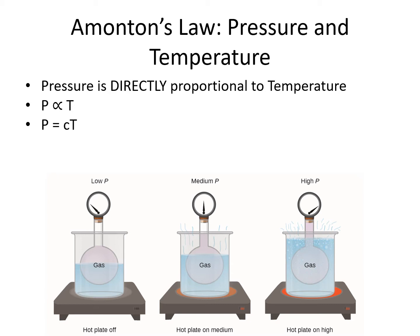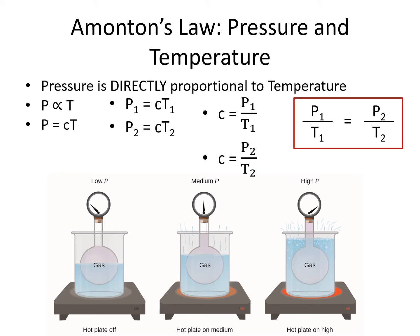This equation is going to be true in a variety of different circumstances. In circumstance 1, P1 equals constant times T1. In a new set of circumstances, P2 equals that same constant times T2. We can rearrange those equations and solve for the constant by dividing both sides by the temperature. We get constant equals P1 divided by T1, and constant equals P2 divided by T2. Since it's the same constant in both cases, we can set the other sides equal to each other: P1 over T1 equals P2 over T2.